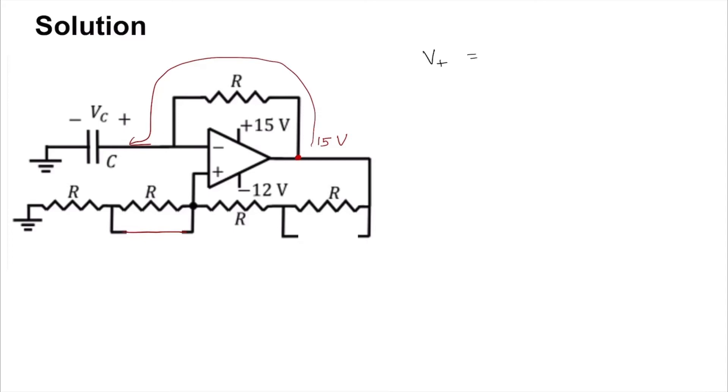What is VC? VC is now simply going to be charging up to 15 volts. But what is V plus? It is simply going to be 15 times R by R plus 2R, just based on this voltage divider.